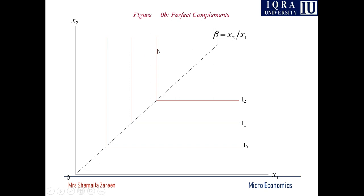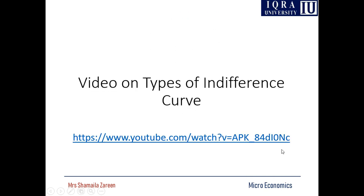The property of convexity and the property of indifference curves state that the marginal rate of substitution must be falling, and indifference curves must be convex — depending on the property of diminishing marginal rate of substitution. But in the perfect complements case, the MRS is 0 and all indifference curves are L-shaped — this violates the properties of the indifference curve. You can see this video for further illustration of the types of indifference curves.